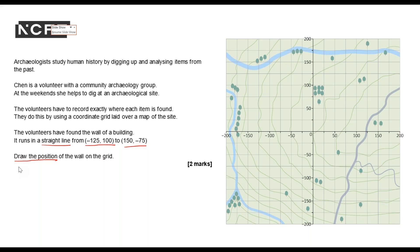So I'm going to draw a little dot here and then the other coordinate. I need to draw the position of the wall and the wall is a straight line so I'm going to need to draw a straight line onto this grid, so from this point to this point.